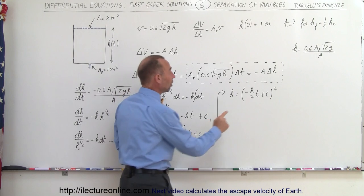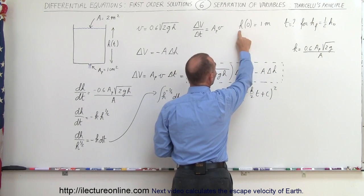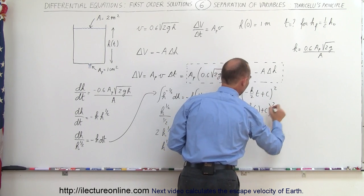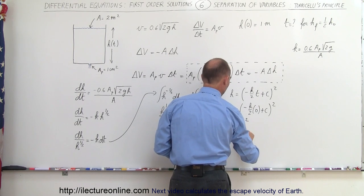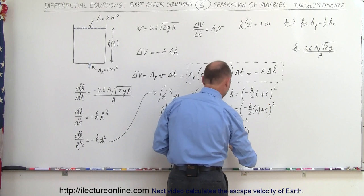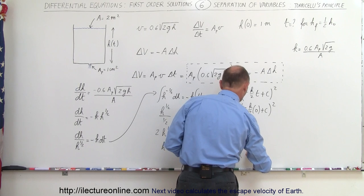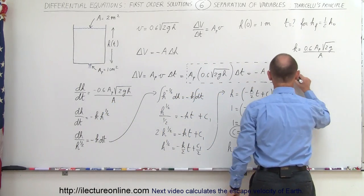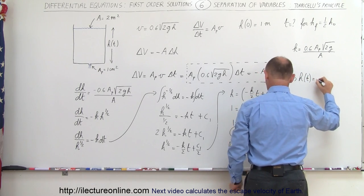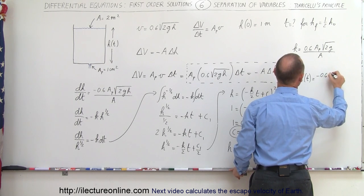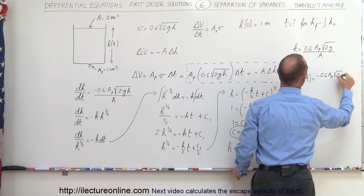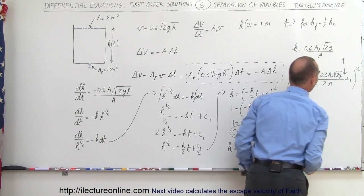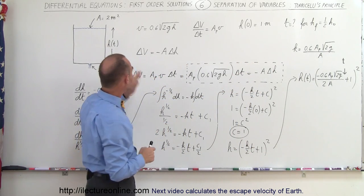Now I want to use the initial conditions to solve for the constant C. I know that when t is equal to zero, H is equal to one, so let me plug that in: one is equal to the quantity minus K over 2 times zero, plus C, quantity squared. Notice that this becomes zero, which means one equals C squared, or C is equal to one. Plugging that back in: H is equal to the quantity minus K over 2 times t, plus one, quantity squared. And remembering what K is equal to, I can write that H, the height as a function of time, is equal to the quantity minus 0.6 A sub P times the square root of 2G, divided by 2 times A, times t, plus one, quantity squared. And that is the final solution that tells us the height as a function of time.